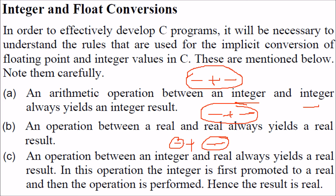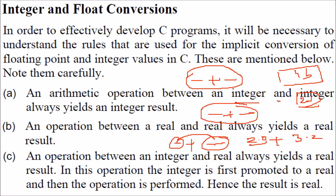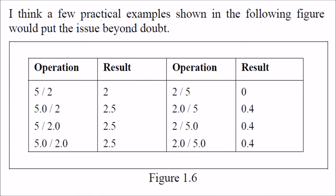The lower memory requirement of the integer will first be changed into real. For example, if you are adding 2 with 3.2, this 2 will be converted to 2.0. In memory, if float is 4 bytes and integer is 2 bytes, you cannot add a 2-byte value with a 4-byte value. The integer must be converted into 4 bytes, then 4-byte and 4-byte can be added. So 2 will be converted to 2.0, then added with 3.2.